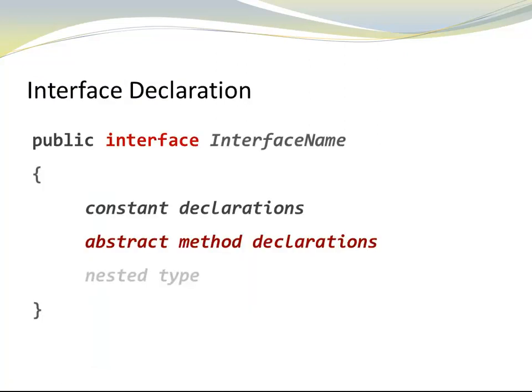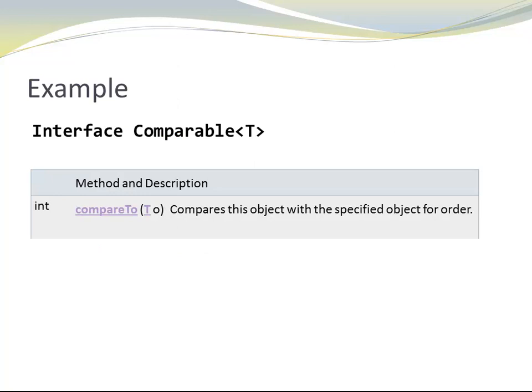More frequently, interface declarations include abstract methods, a specification of the method signature but no implementation. Here is an example from the Java API, interface Comparable. It includes exactly one method called compareTo, and compareTo imposes an order on the instances of the class.